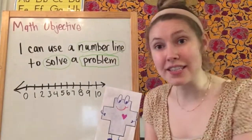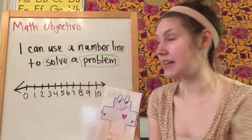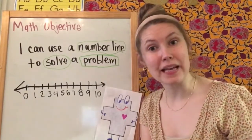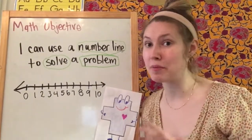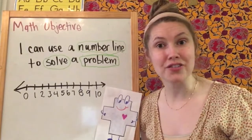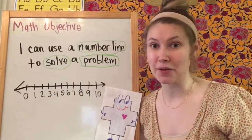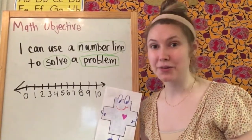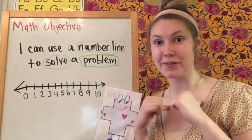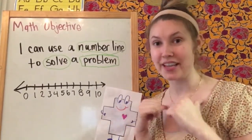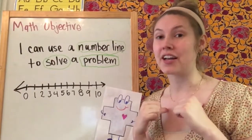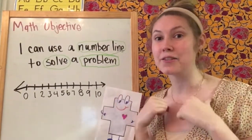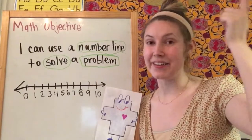Today we're going to be using our number line as a new strategy. I have a little song to help explain what a strategy is because we've been using that word a lot, and I want to make sure you know exactly what it means. A strategy is a tool that I can use, I can use, I can use — a strategy is a tool that I can use to help me learn.